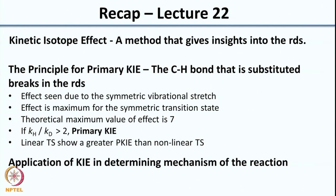Primary kinetic isotope effect gives an insight into the rate determining step and whether the bond that you are making the substitution at is cleaved during the rate determining step. The principle is that the C-H bond that is substituted breaks in the rate determining step. The effect is seen due to the symmetrical vibrational stretch, and is maximum for a symmetric transition state — the theoretical maximum value is 7. A KH/KD value greater than 2 is called a primary kinetic isotope effect.